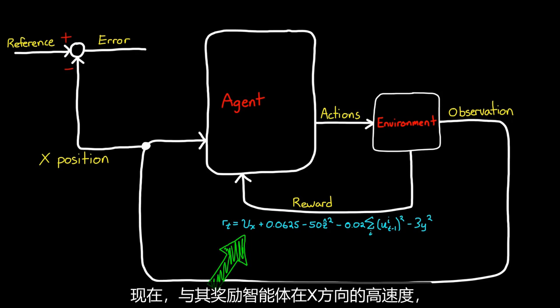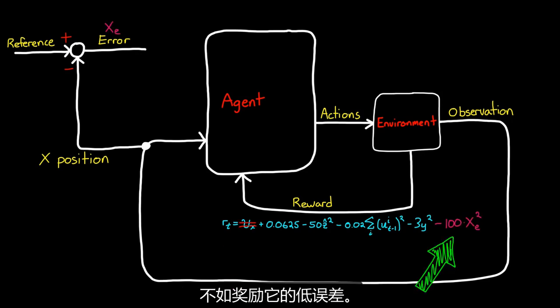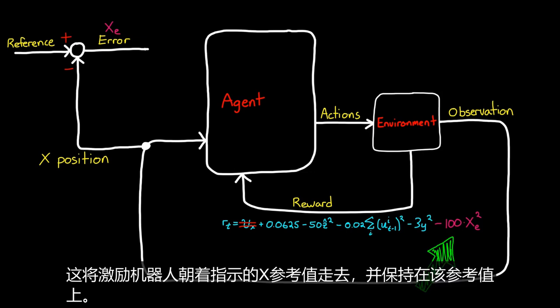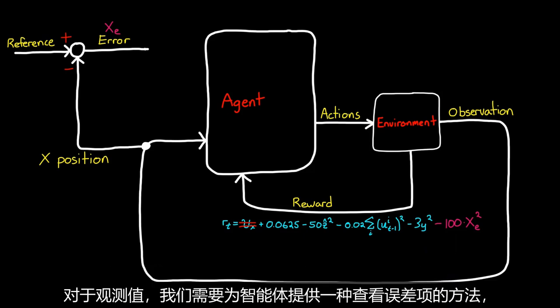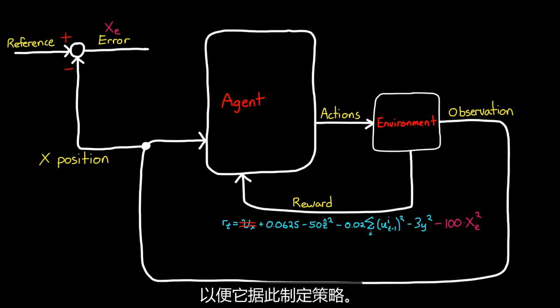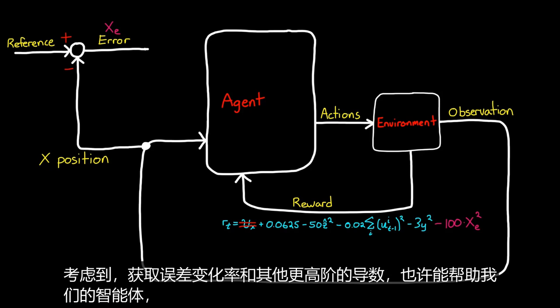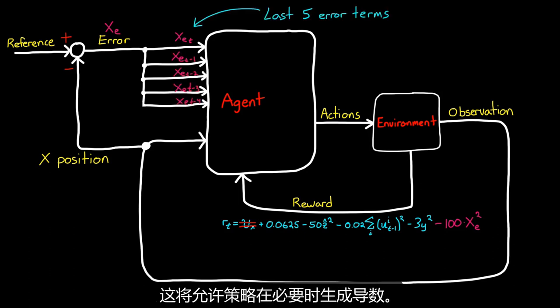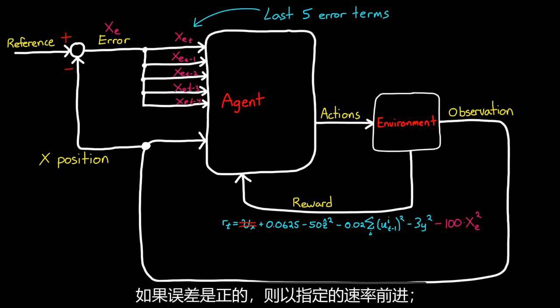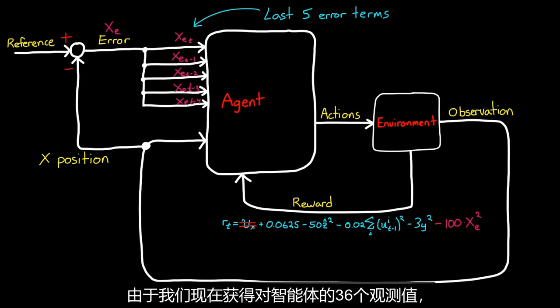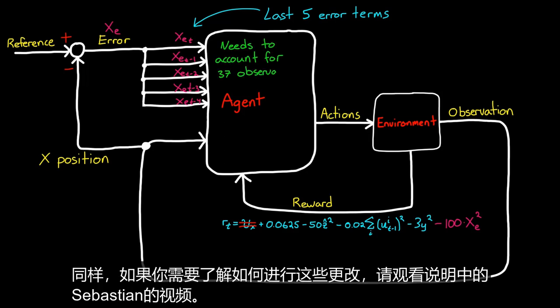Now, rather than reward the agent for a higher velocity in the x direction, we can reward it for low error. This should incentivize the robot to walk towards and stay at the commanded x reference value. For the observations, we need to give the agent a way to view the error term so that it can develop a policy accordingly. Since it might help our agent to have access to the rate of change of error and maybe other higher derivatives, I'll feed in the error from the last five sample times. This will allow the policy to create derivatives if it needs to. Eventually, the policy will be to walk forward at some specified rate if the error is positive and then backwards if it's negative. And since we now have 36 observations into our agent, we need to adjust our actor network to handle the additional inputs. Again, check out Sebastian's video in the description if you need guidance on how to make those changes.